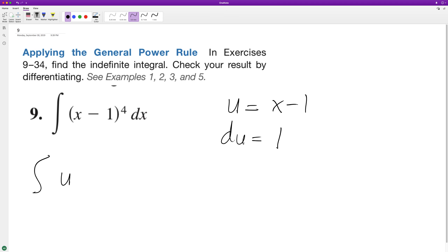So we integrate u raised to the fourth, which is going to be u to the fourth plus one over four plus one plus c. So we end up with u to the fifth over five plus c.